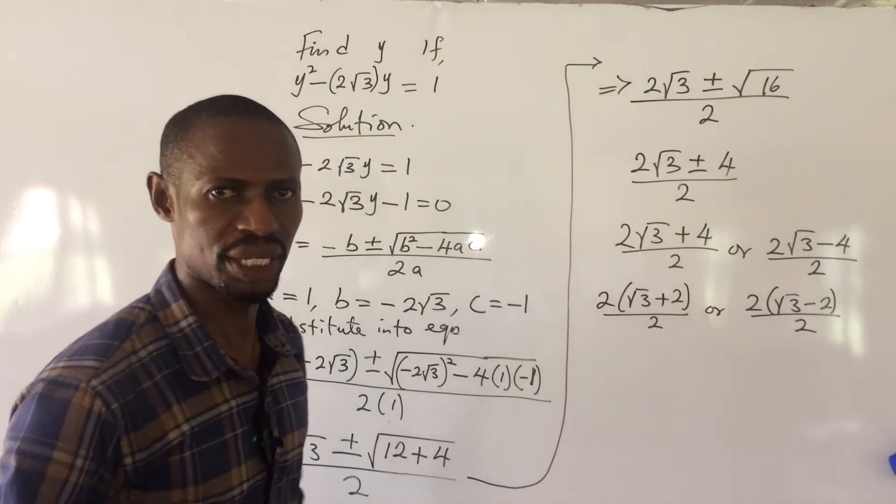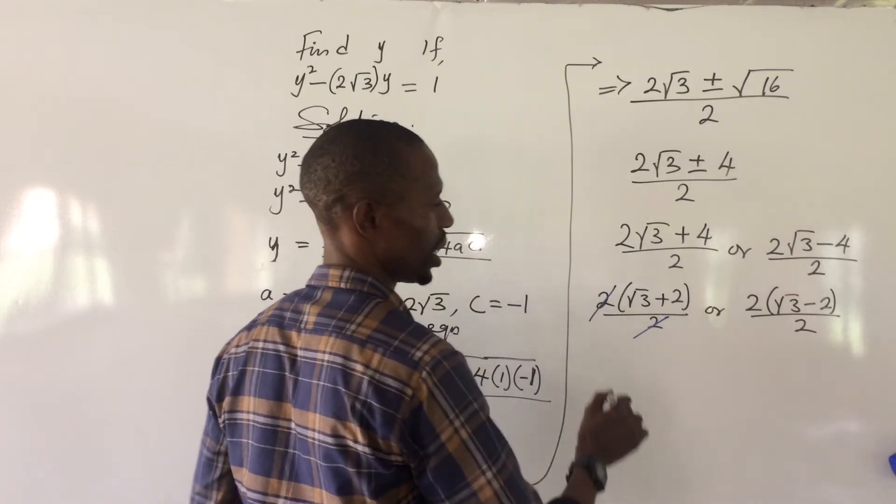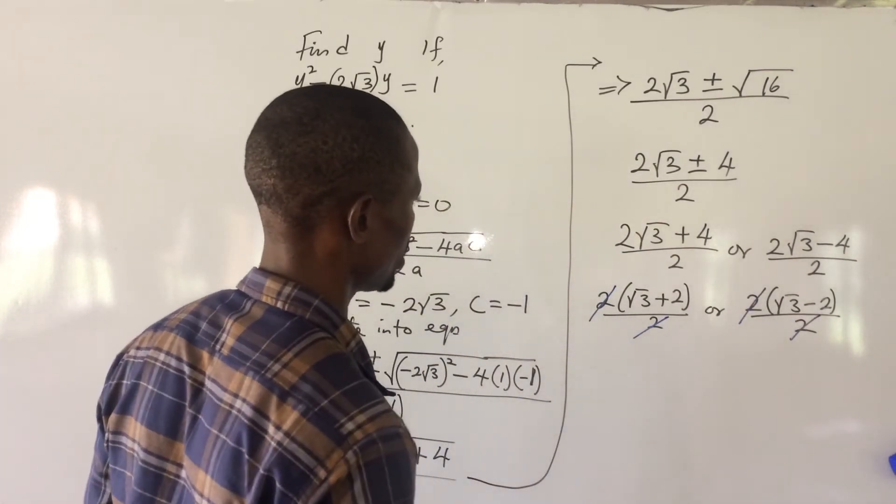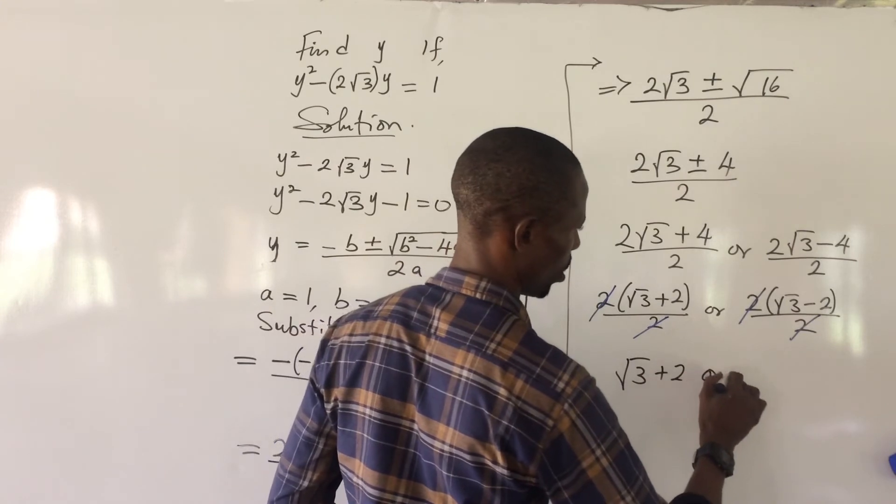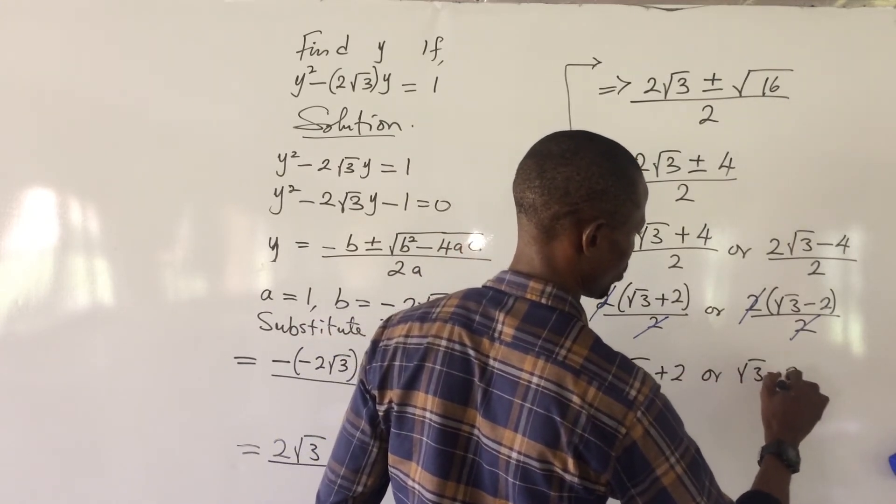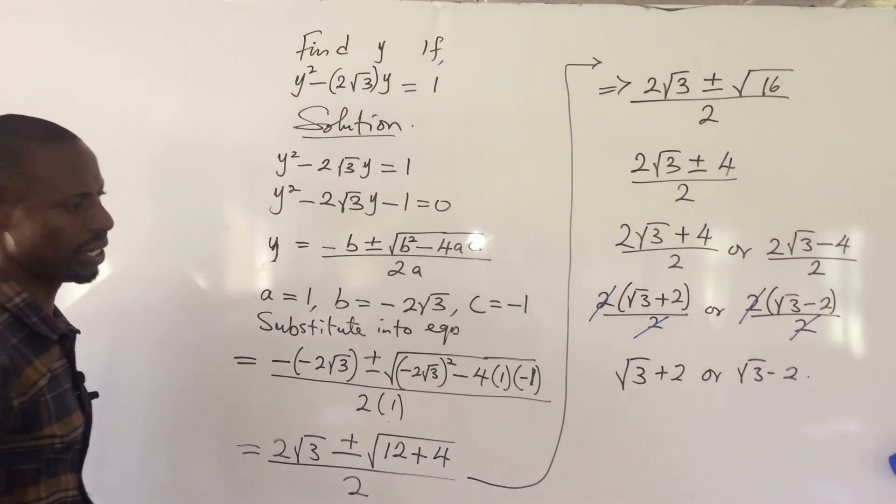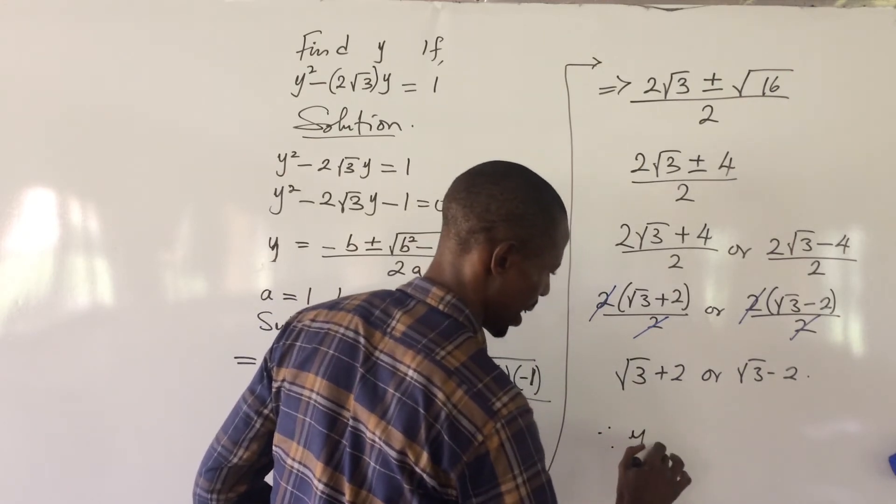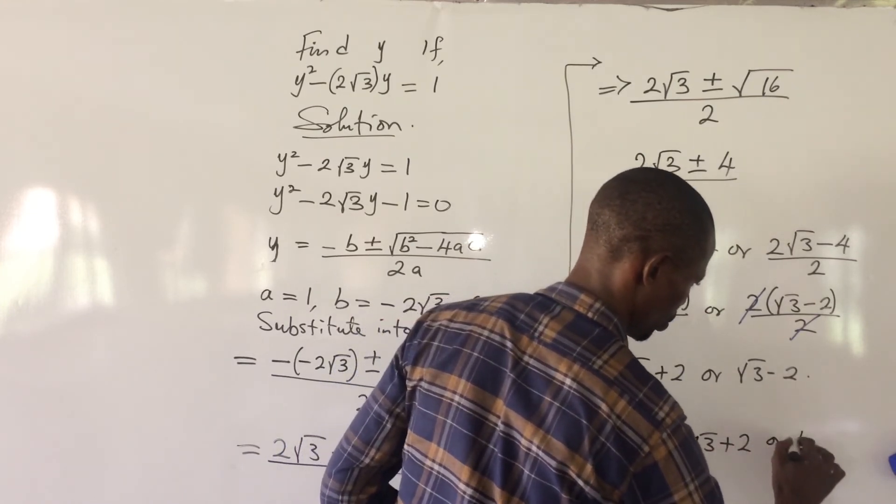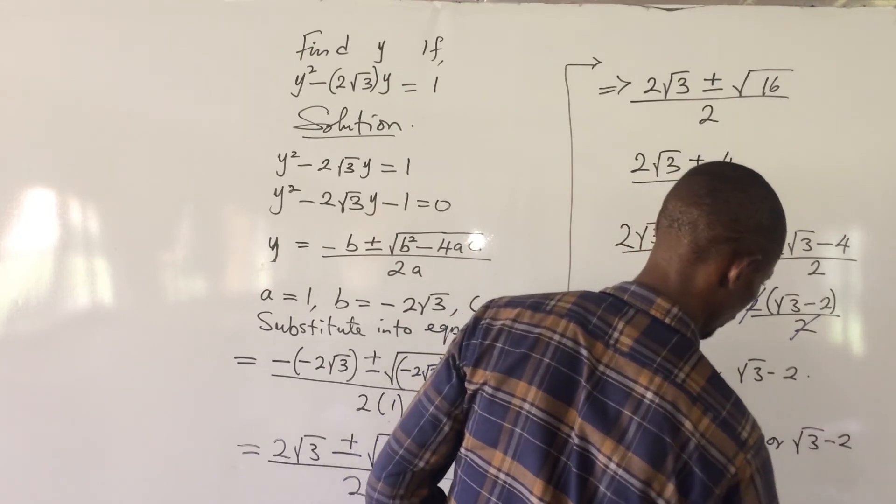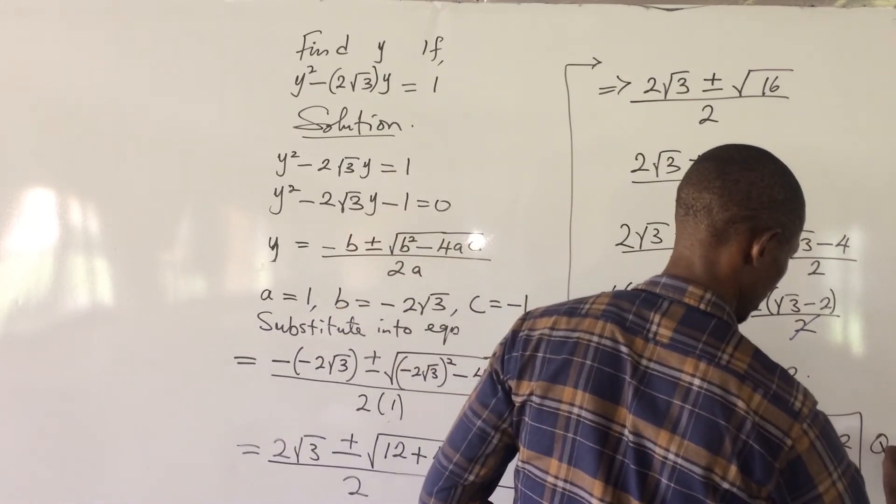We are now having 2 at the denominator and 2 at the numerator. So, they can strike out themselves. So, we are now left with root 3 plus 2. Or root 3 minus 2. These are the roots. So, these are the roots to this quadratic equation.